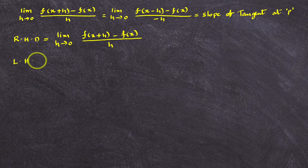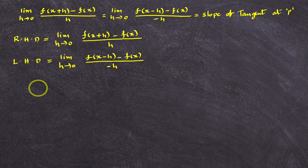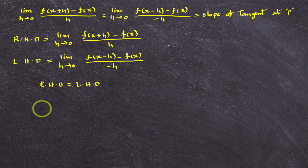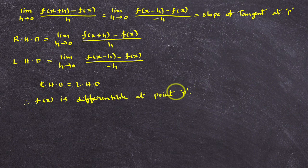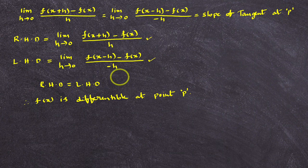What about the left-hand derivative? The left-hand derivative is: limit h→0 of [f(x−h) − f(x)] / (−h). When the right-hand derivative is equal to the left-hand derivative, then we say that f(x) is differentiable at point p. To decide whether a function is differentiable or not, we first calculate the right-hand derivative and the left-hand derivative. If they are equal, the function is differentiable, and both give you the slope of the tangent to the curve at point p.